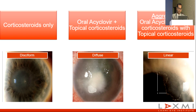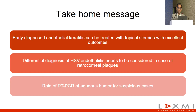As far as treatment of the three forms is concerned: disciform endothelitis can be treated with topical corticosteroids alone. Diffuse endothelitis will require oral acyclovir along with topical steroids. Linear endothelitis, most commonly seen in post-keratoplasty patients, will require oral acyclovir and oral corticosteroids along with topical corticosteroids. The take-home message is that early diagnosed endothelial keratitis can be treated with topical steroids with excellent outcomes, and the role of RT-PCR of aqueous humor for suspicious cases should be considered.